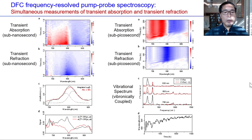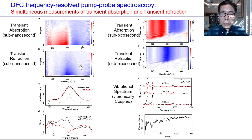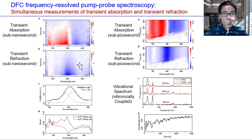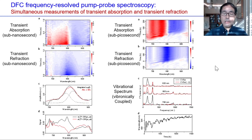From the measured time-domain interferogram, we obtained transient absorption and transient refraction spectra simultaneously with femtosecond time resolution over nanosecond timescales. I emphasize that these nanosecond pump-probe spectra with femtosecond time resolution were obtained without using any meter-long translational stage.